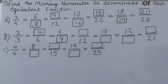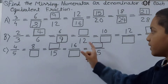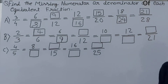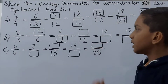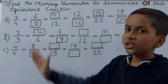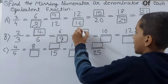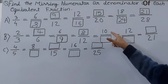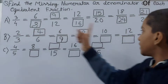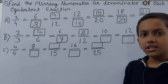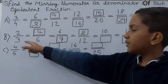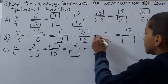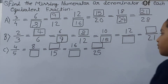Next: □/12 — we have the denominator 12, and our original denominator is 3: 3 times 4 is 12. So 2 times 4 is 8, meaning 8 goes in the numerator column. Next: 10/□ — we have the numerator. Our numerator is 2 and here it is 10: 2 times 5 is 10. So 3 times 5 is 15, meaning 15 goes in the denominator column.